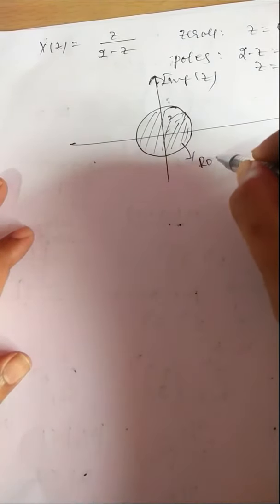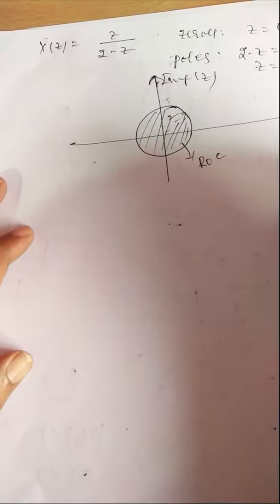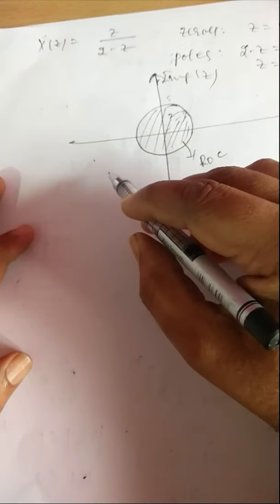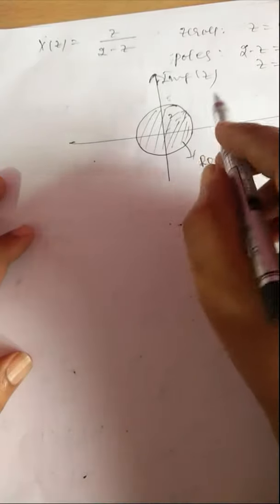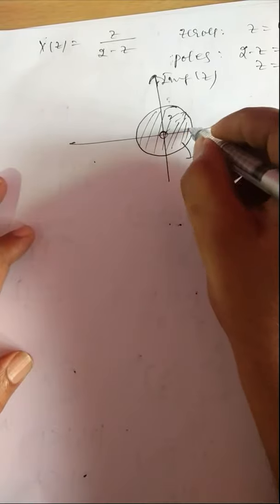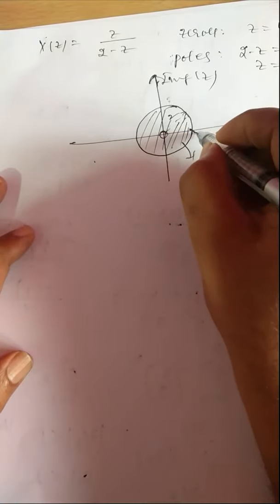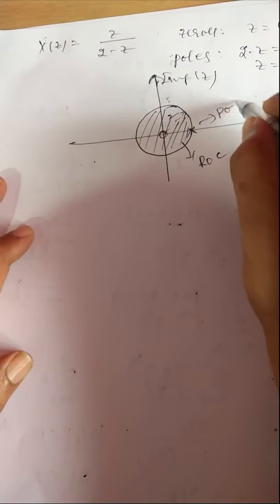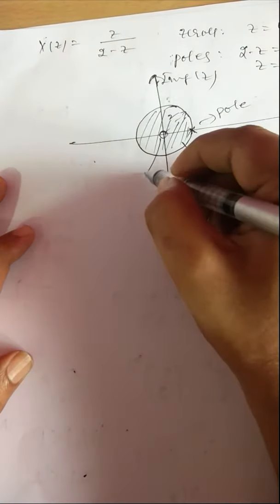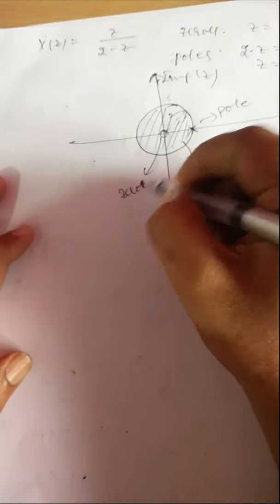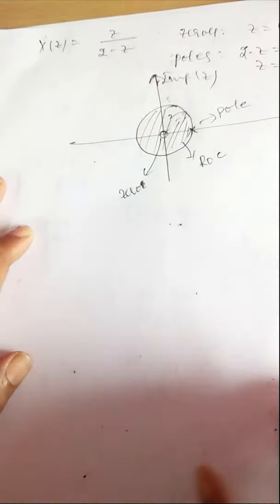Since the input sequence X(n) is a left-sided infinite duration sequence — it exists from -1 to -∞ — the ROC is inside the circle. It has one zero at Z = 0 and one pole at Z = 2. The pole is marked with a cross (×) at Z = 2, and the zero is marked with a circle (○) at Z = 0.